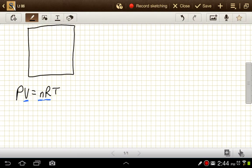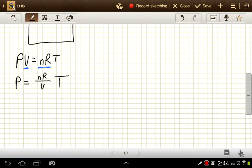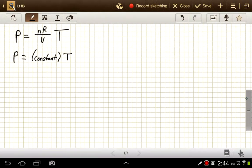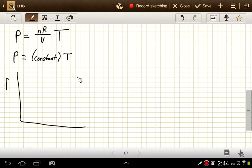So if I rewrote this, pressure equals nR over V times T. Since these three are constant values, we can see that there's just a linear relationship here. Pressure is equal to some constant times the temperature. So if we were to graph that, pressure and temperature here, we just have a straight line that increases with some slope that's equal to nR over V. So as pressure increases, temperature increases.